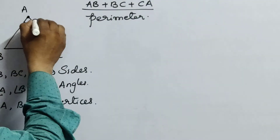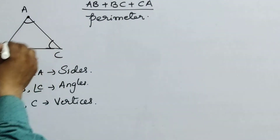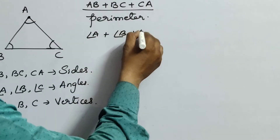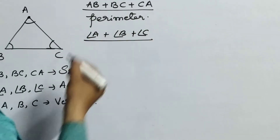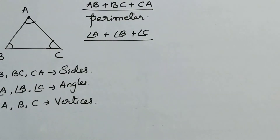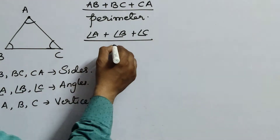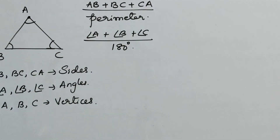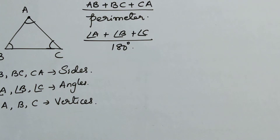And here, if you see clearly triangle ABC, angle A plus angle B plus angle C is the sum of the three angles. So, sum of the three angles of a triangle equals to 180 degrees. Basing on this triangle, we have six types of triangles.